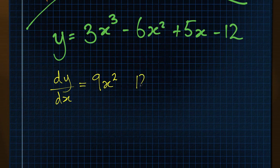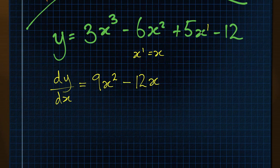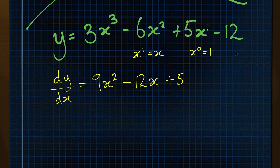2 times 6 is 12, with a minus sign in between. Reduce the power and that becomes x to the power of 1, which is just the same as x. The plus 5x term is 5x to the power of 1; 1 times 5 is 5, and when we reduce the power that becomes x to the power of 0, which equals 1, so this is just 5. The x disappears, and the final constant term minus 12 has no x in it at all, so it disappears altogether. This is the completed gradient function dy by dx.